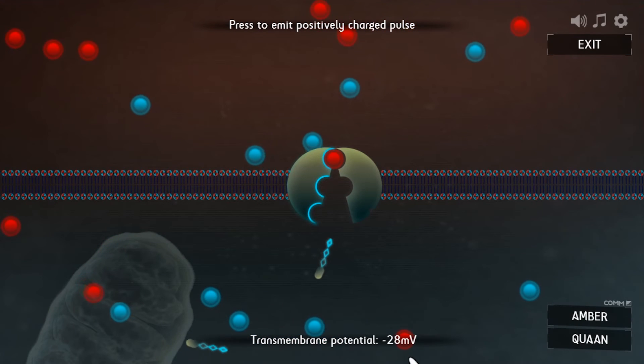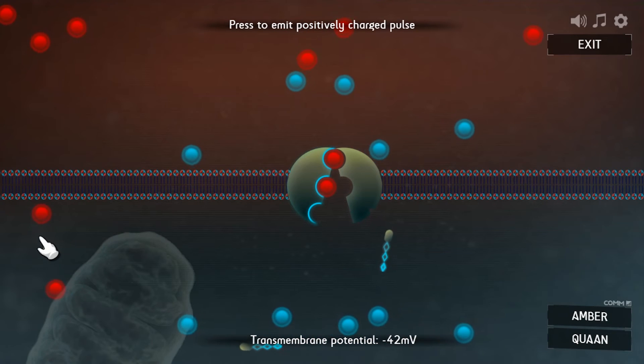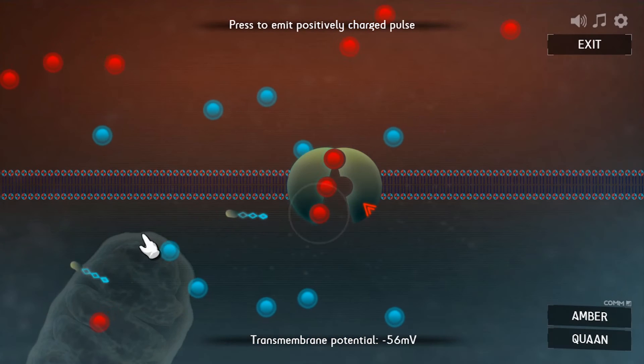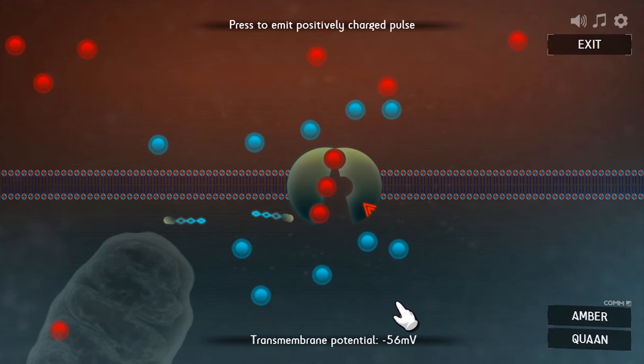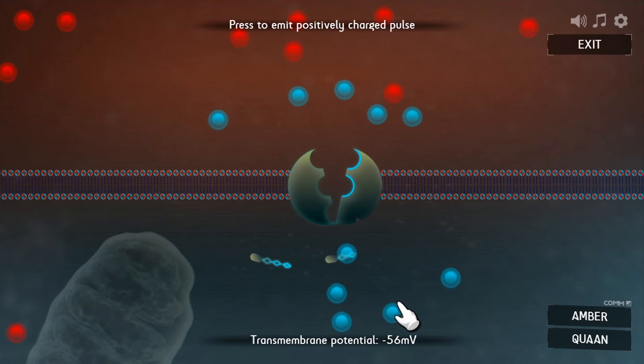So every time you move three positive ions out of the cell only two positives come back in. There are only ten positive ions in the game so it takes three rounds to finish. But you've only got two lots of ATP.